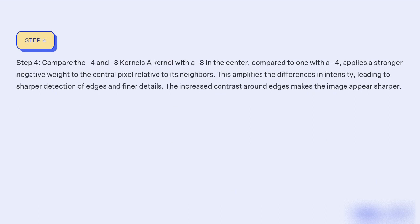Step 4: Compare the -4 and -8 kernels. A kernel with -8 in the center, compared to one with -4, applies a stronger negative weight to the central pixel relative to its neighbors. This amplifies the differences in intensity, leading to sharper detection of edges and finer details. The increased contrast around edges makes the image appear sharper.